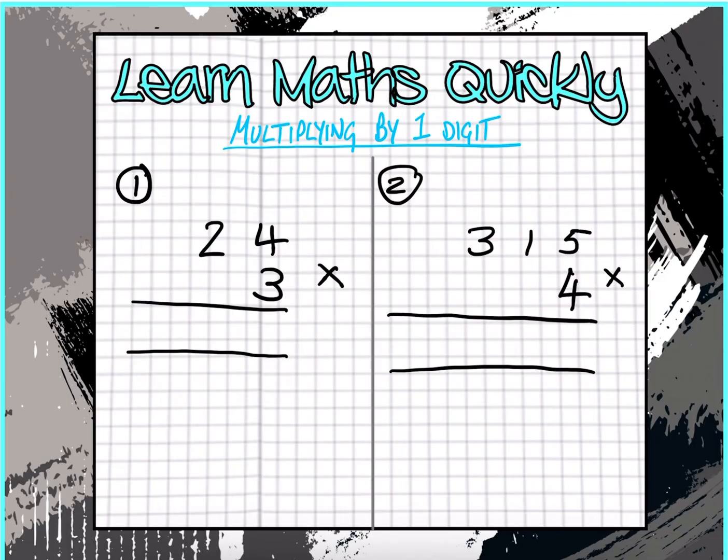So, 4 times 3 equals 12, so we're going to put a 2 here and a 1 underneath the line, but also in column with the 2.